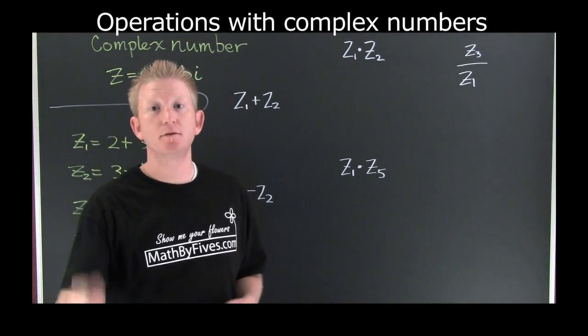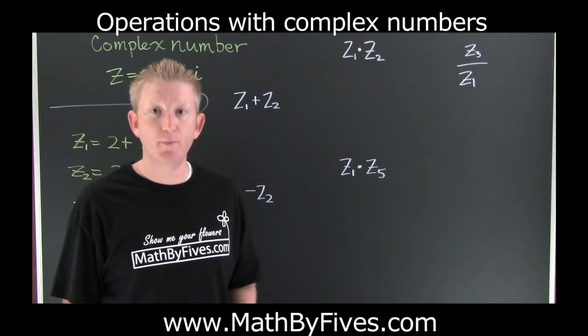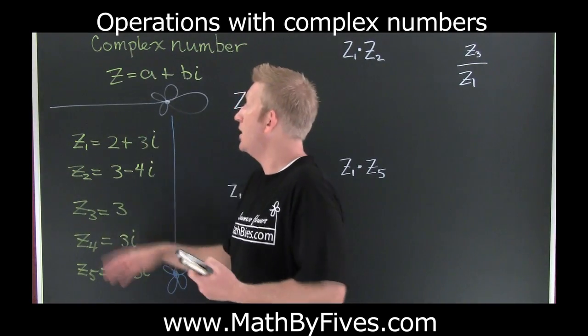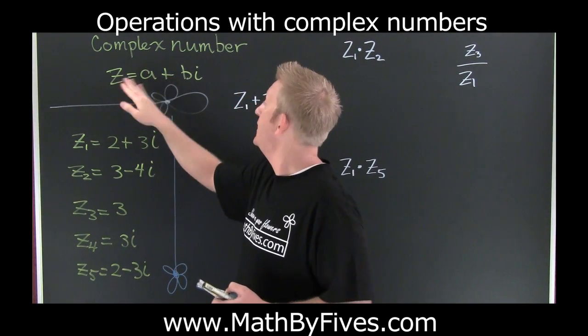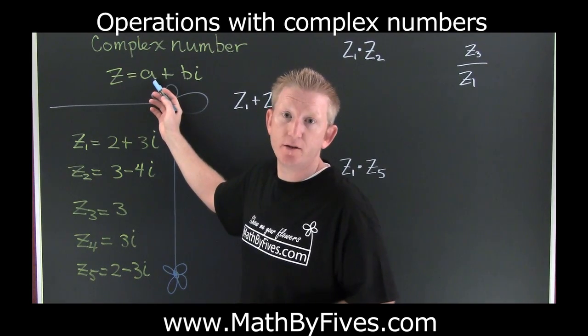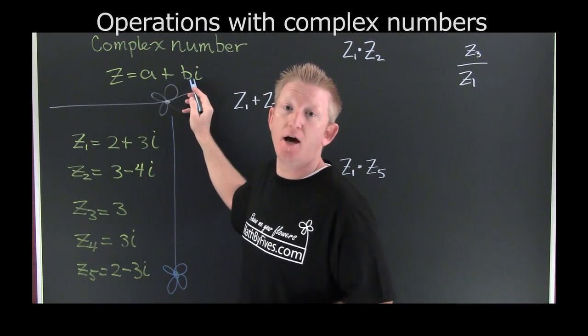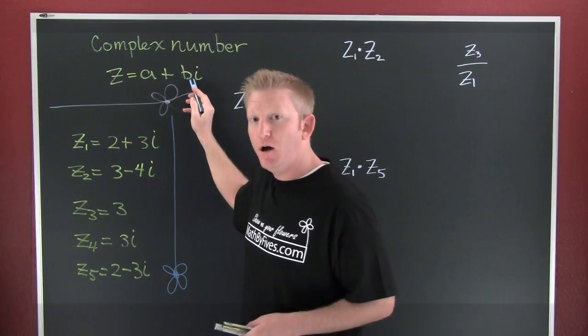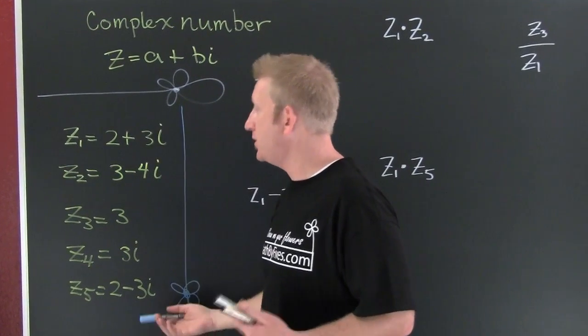Now I'm going to talk about operations with complex numbers. A complex number is any number in the form a plus bi, where a is the real part and b is the imaginary part.